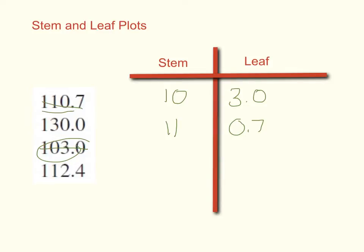But that's not all. I also have this one here, 112.4, so I don't have to rewrite anything in the stems column. It's still 11 tens, but I'm going to write 2.4 for my leaf.